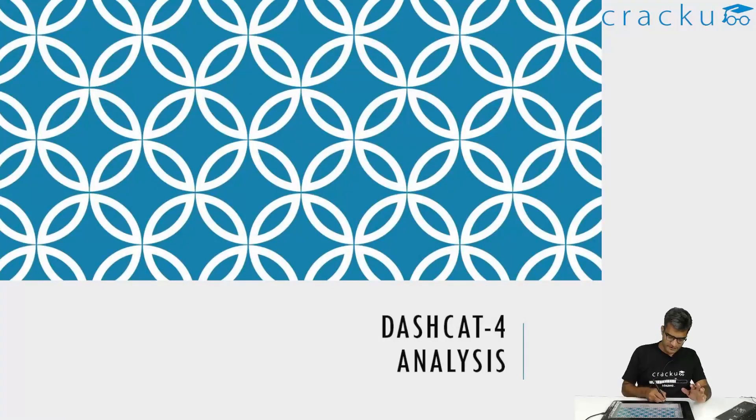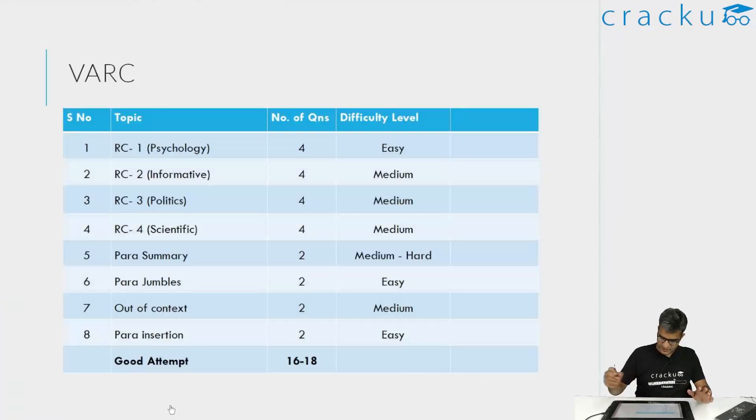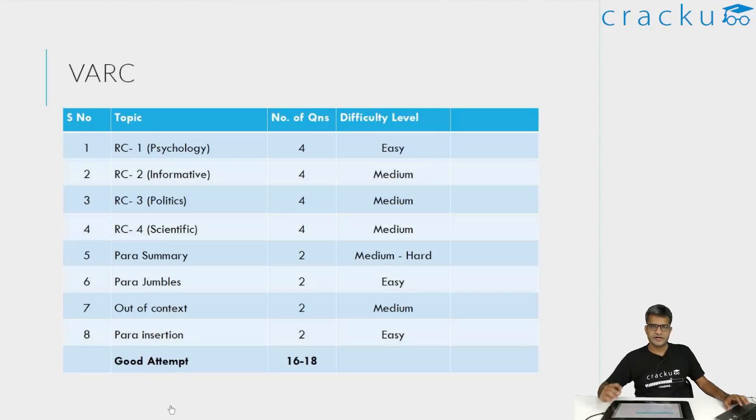Dashcat 4 — if you first start off with the verbal section. The verbal section, as expected, had 4 RCs.